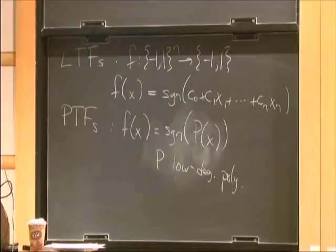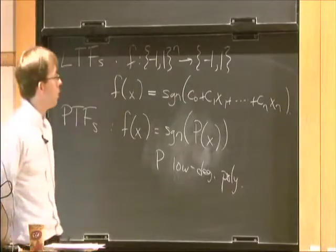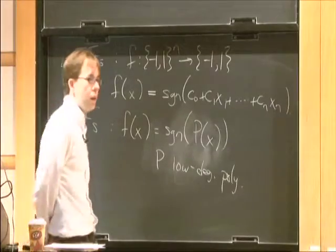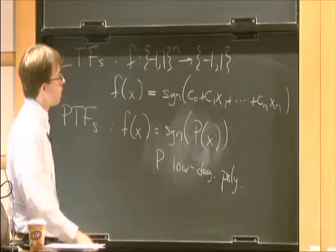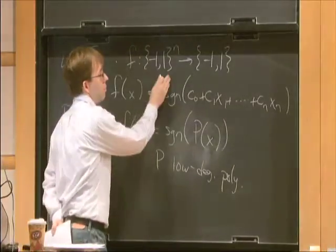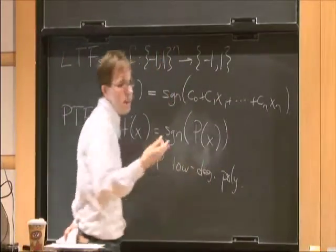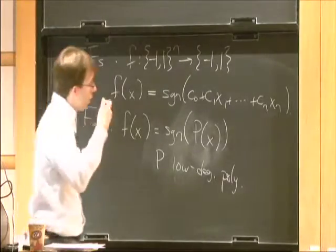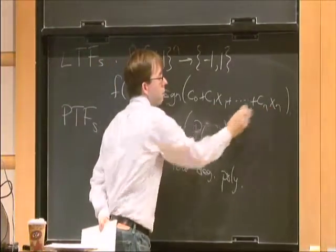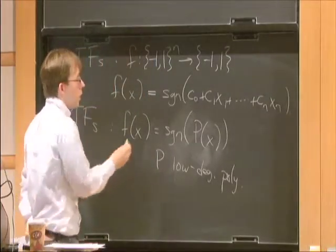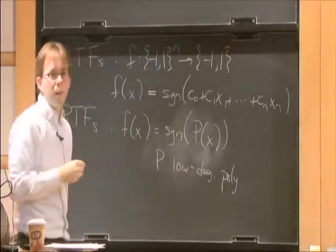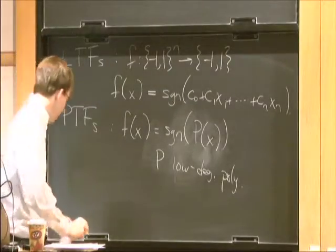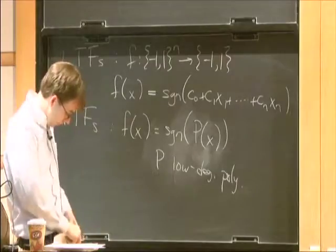LTFs are at the heart of learning theory, circuit complexity — they're the definition of gates in TC0 — hardness of approximation, voting theory, and so forth. There's also a generalization called polynomial threshold functions, which is the sign of a low degree polynomial p over the variables x. When the input bits x_1 through x_n are independent uniform plus or minus 1, you have a sum of independent random variables, exactly the kind of thing analyzed with the central limit theorem.